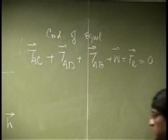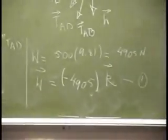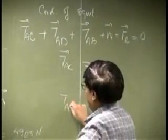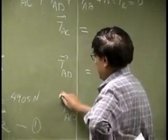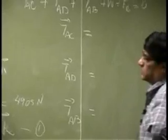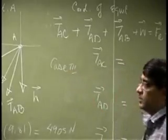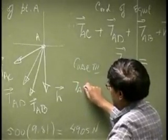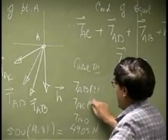We need the forces in vector form. We have to go through the exact same process we went through before — that means we need TAC, we need TAD, and we're going to need TAB. These forces are similar to case 3, meaning you have a magnitude which is unknown. TAB, TAC, and TAD all have unknown magnitudes.